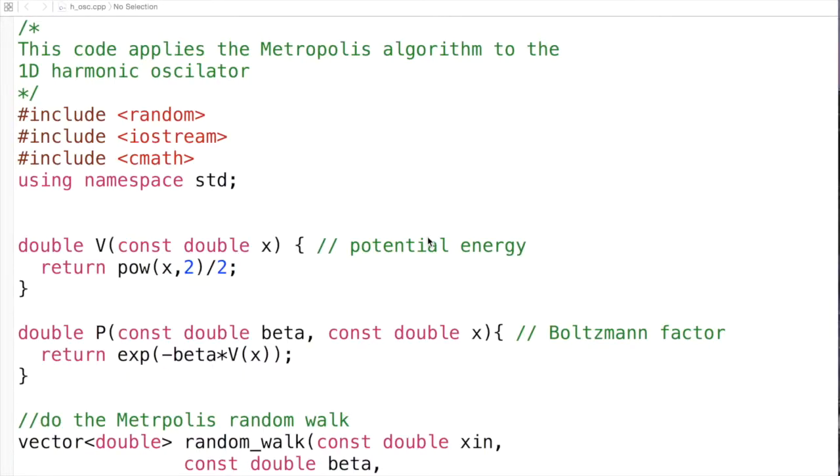So here we'll have a look at the implementation of the Metropolis algorithm for the 1D harmonic oscillator all done in C++.